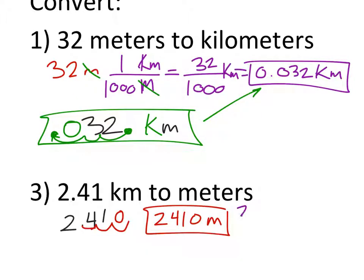Now again, we can look at this using the unit conversion stuff. 2.41 kilometers times something over kilometers equals meters. There's a thousand meters for one kilometer. And again, the kilometers cancel out. 2.41 times a thousand is still 2,410 meters.